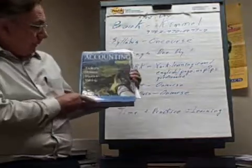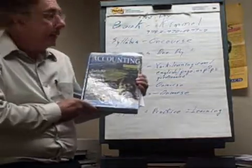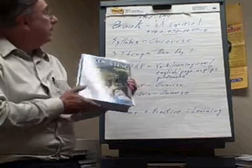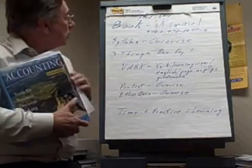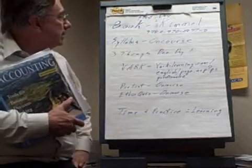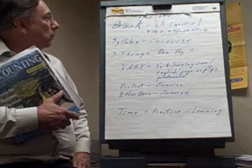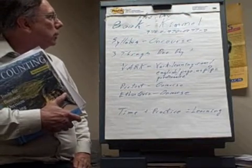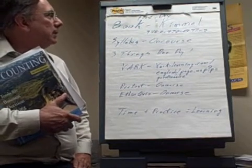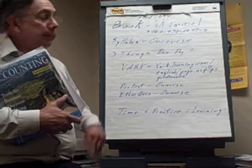Here's our book. This is Kimmel, Weigand, and Kiso. The ISBN number, if you're ordering it, is 978-0470-0877-2.